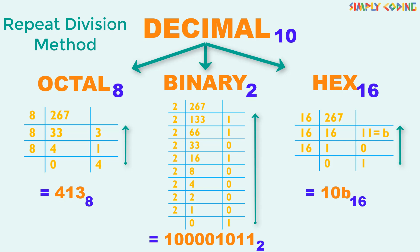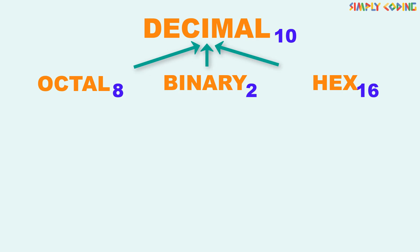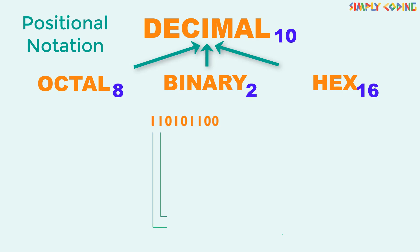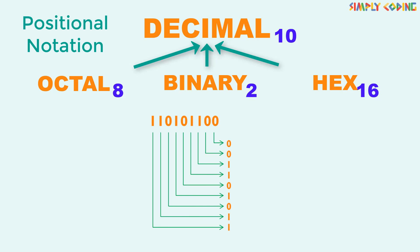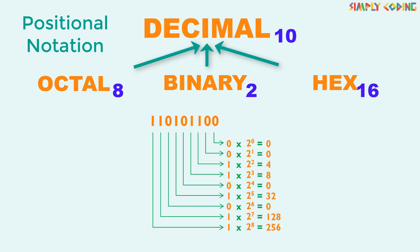You can practice this by using different decimal numbers. Now let's do the reverse. We will first convert binary to decimal. Here we use the positional notation method. For this we write down the given binary number vertically with the least significant digit first and multiply each digit by its weight. Since binary is a positional number system, each digit's weight is its place value raised to the power of 2. After multiplying each digit with its corresponding weight, we sum them up. This gives 428, which is the decimal equivalent of the binary.